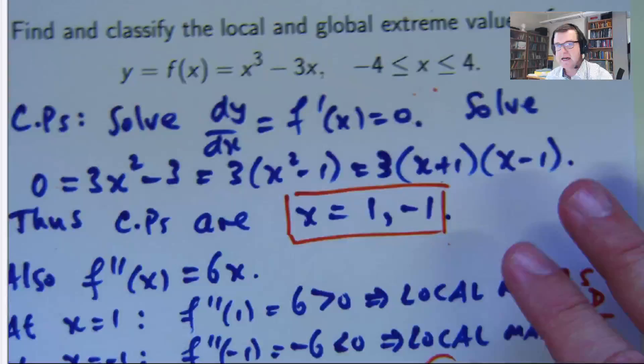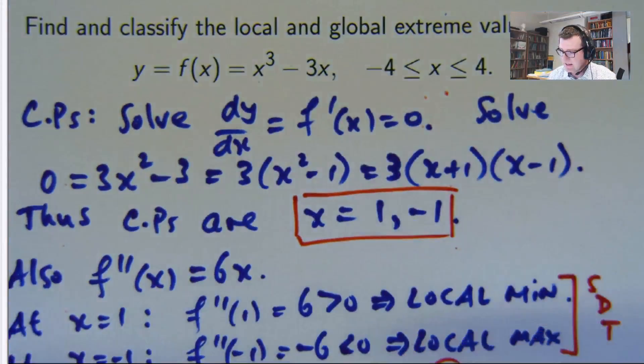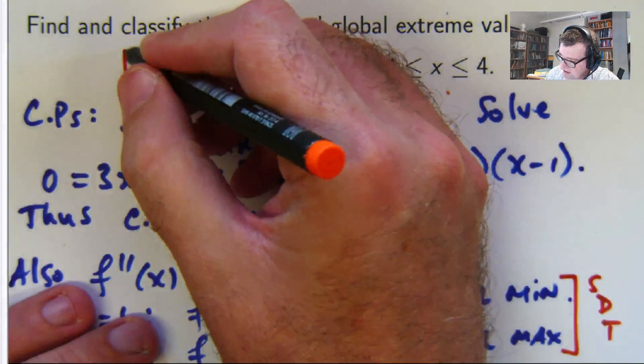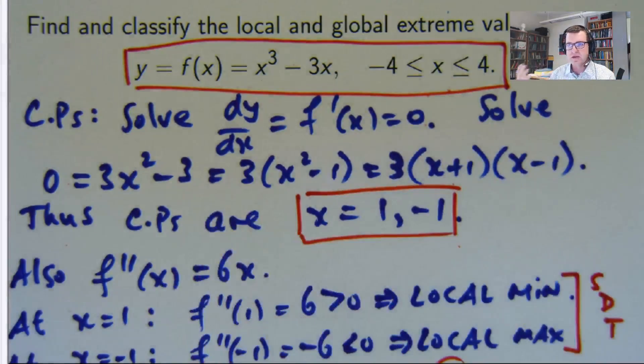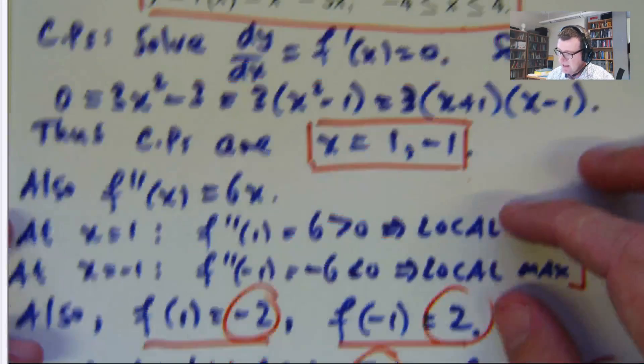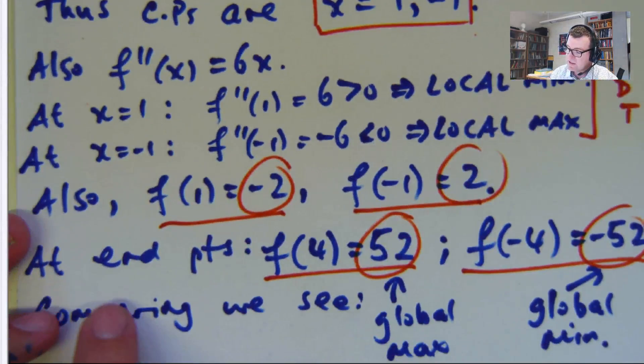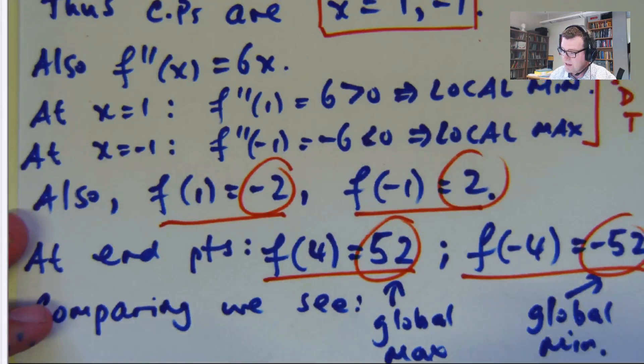You can see here, I looked at finding the critical points first. I then classified them, are they local max, local min, using second derivative test. Finally, I looked at the endpoints of the interval, and I compared everything.